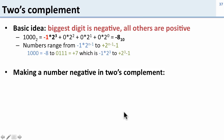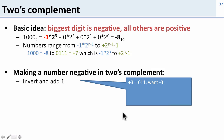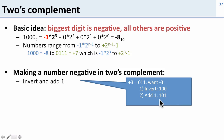So how do we make a number negative in 2's complement? This is really simple: we invert and add 1. Let's take a look at an example. Here's plus 3, which is 0 1 1, and we want negative 3. So the first step is invert: we take 0 1 1 and we invert it to 1 0 0, and now we add 1, so we get 1 0 1.